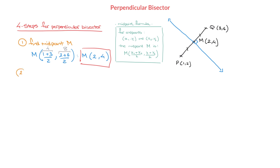Next I move on to step 2. In step 2 we need to find the gradient, or slope, of the line segment PQ. Now remember, given the x and y coordinates of two points, there's a nice formula for finding the gradient of the line passing through those two points. The formula is: the gradient or slope m is equal to (y₂ − y₁) / (x₂ − x₁).